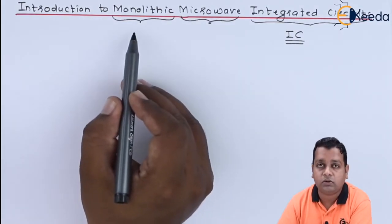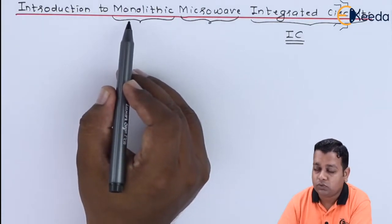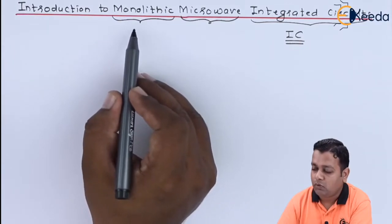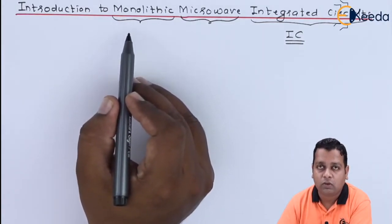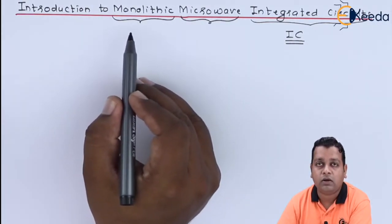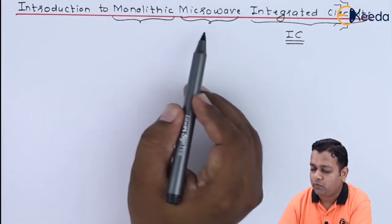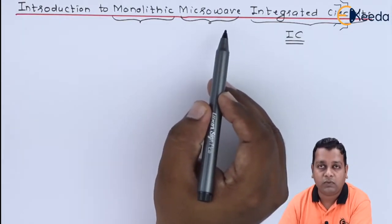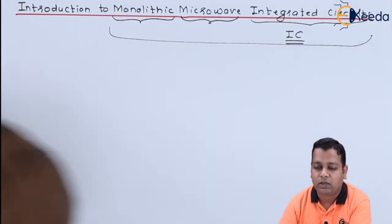Along with that, there is the term monolithic. Monolithic refers to the fabrication of integrated circuits. From the Greek words, monos means single or one, and lithos means stone. So it has been fabricated on a single substrate. When such an IC is operated on a microwave frequency signal, we call it a monolithic microwave integrated circuit.